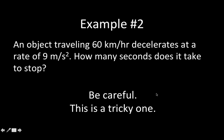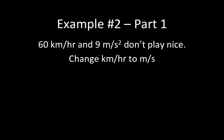Here's the next one. We've got an object traveling at 60 kilometers per hour and it decelerates at a rate of 9 meters per second squared. How many seconds does it take to stop? This is a little tricky. The first part we run into is that 60 kilometers per hour and 9 meters per second squared just don't play nice — it's apples to oranges. So we've got to take kilometers per hour and change those into meters per second so that the math works out.